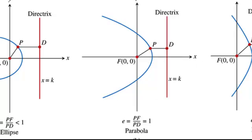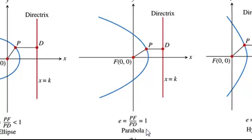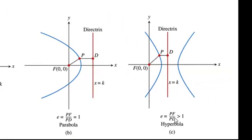And remember, a parabola, that's the definition of a parabola. The set of all points that are equidistant from the focus and the directrix. So if it equals 1, it's a parabola. And if it's greater than 1, it is a hyperbola.